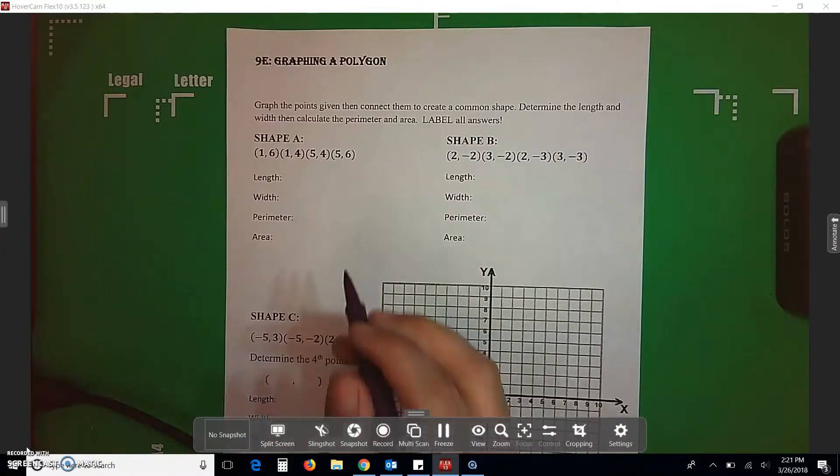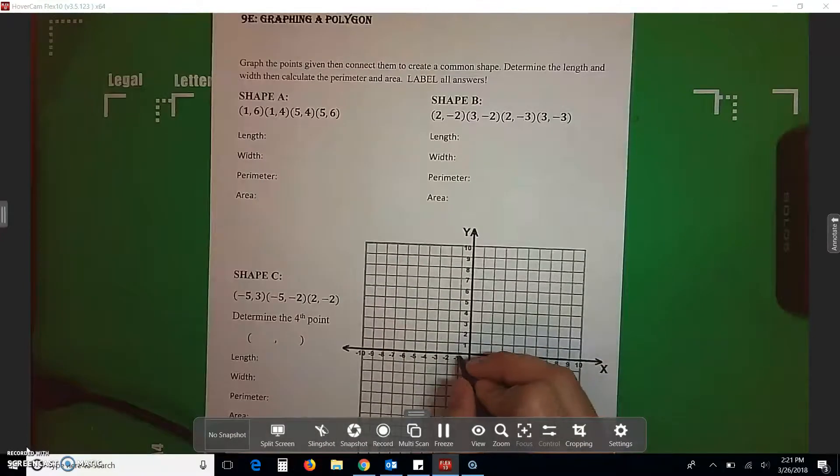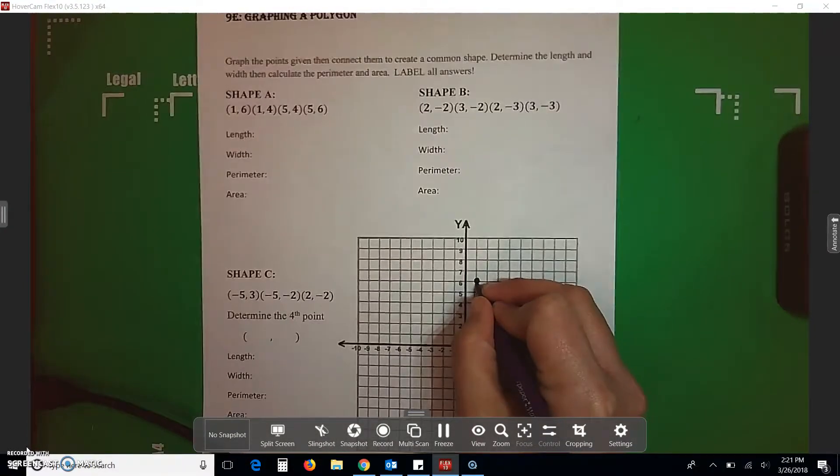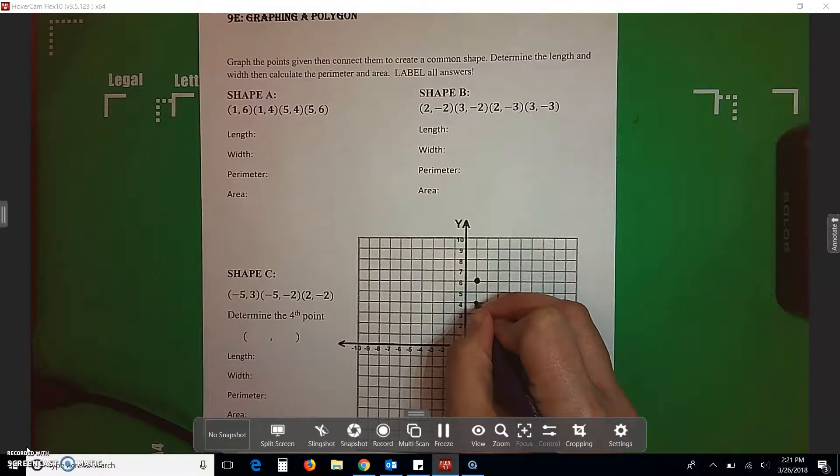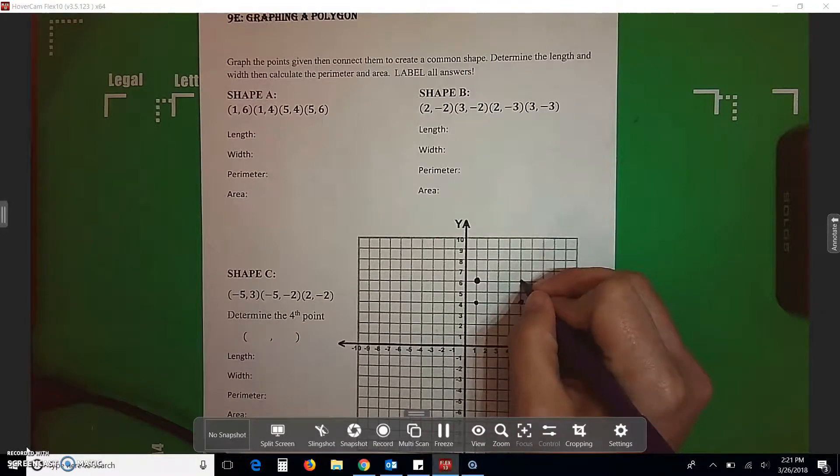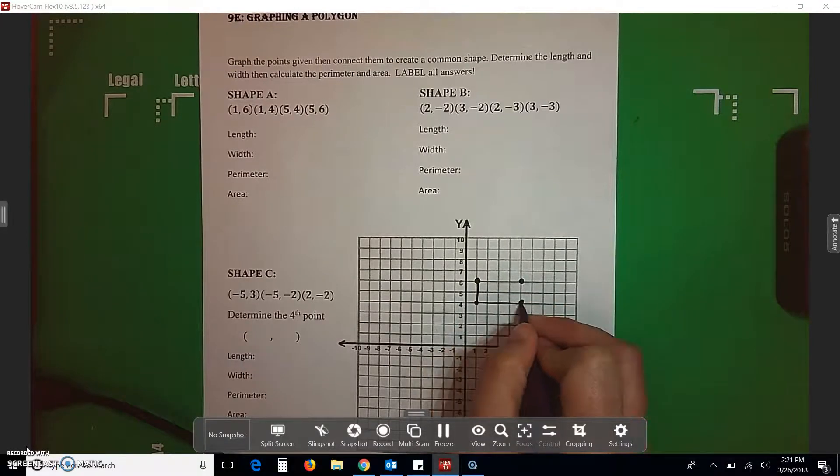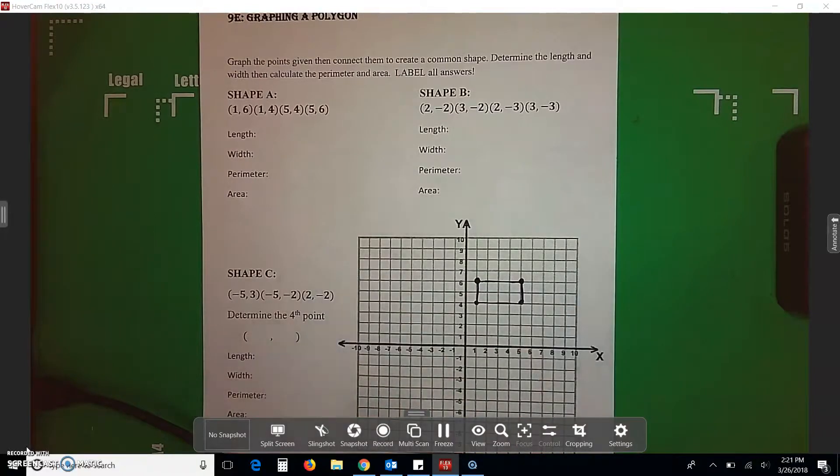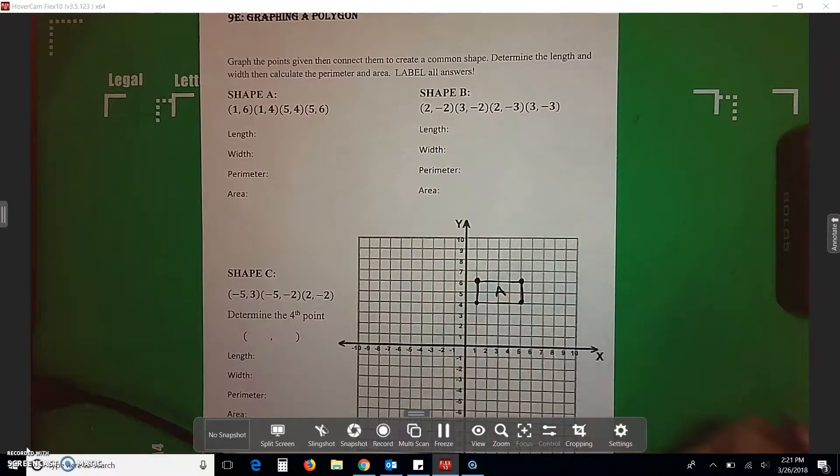So, this one, we're going to start with shape A. And it says that our first point is 1, 6. So, over 1, up 6. Over 1, up 4. Over 5, up 4. Over 5, up 6. Then we can connect our dots. And it says we have to label everything and this is shape A. So, I'm going to put an A right in the middle of my box.